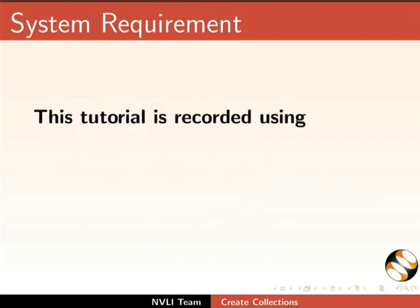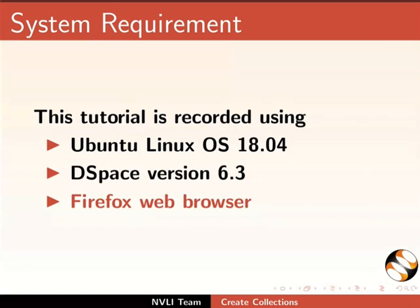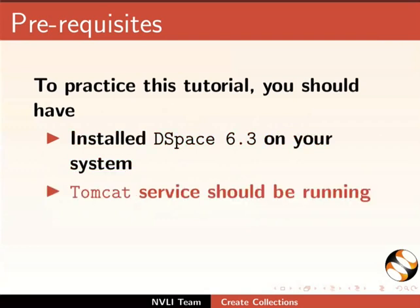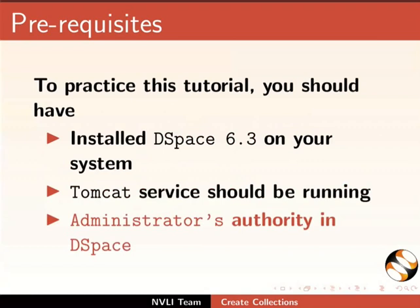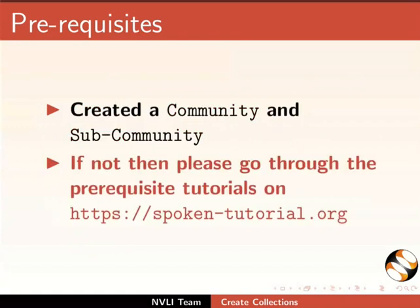This tutorial is recorded using Ubuntu Linux OS 18.04, DSpace version 6.3, and Firefox web browser. However, you may use any other web browser of your choice. To practice this tutorial, you should have installed DSpace 6.3 on your system. Tomcat service should be running. Have administrator's authority in DSpace, and have created a community and sub-community. If not, please go through the prerequisite tutorials on this website.